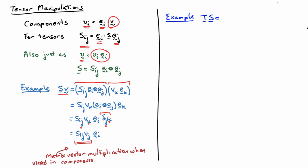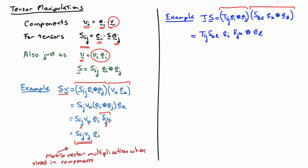Let's look at another example: the product of two tensors, T product with S. We'll do the same thing as with the vector case and substitute in for T and for S using the component form. T is Tij EI outer product EJ. Then substitute a similar expression for S — just be aware that you need to pick different subscripts for the sum, otherwise you'll violate the Einstein summation convention.